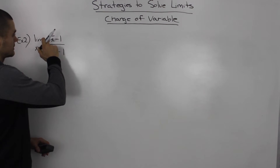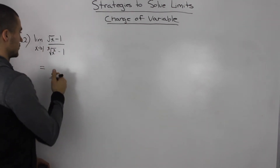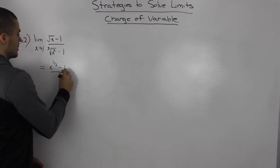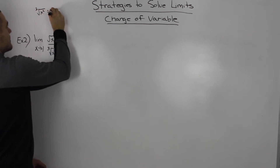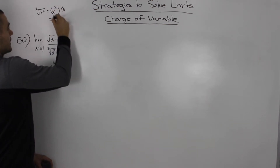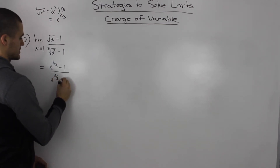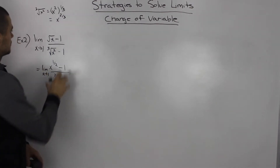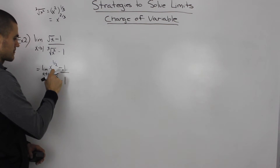Notice how we have these x's in radical terms. So the first thing you want to do with this kind of question is change these to exponential form. The square root of x is just x to the power of 1/2. And the third root of x squared — that's x squared to the power of 1/3, which gives us x to the power of 2/3. So this limit becomes: limit as x goes to 1 of x^(1/2) minus 1 over x^(2/3) minus 1.